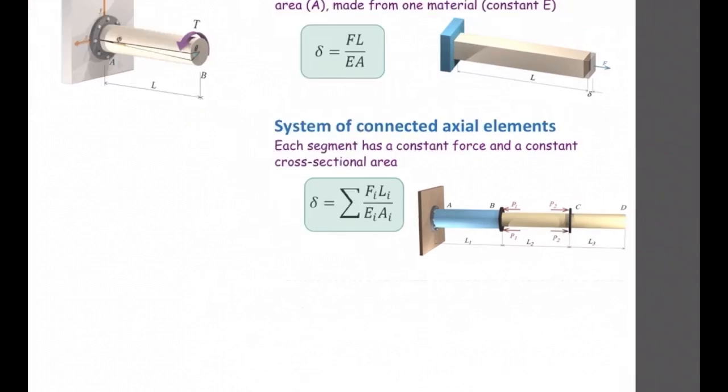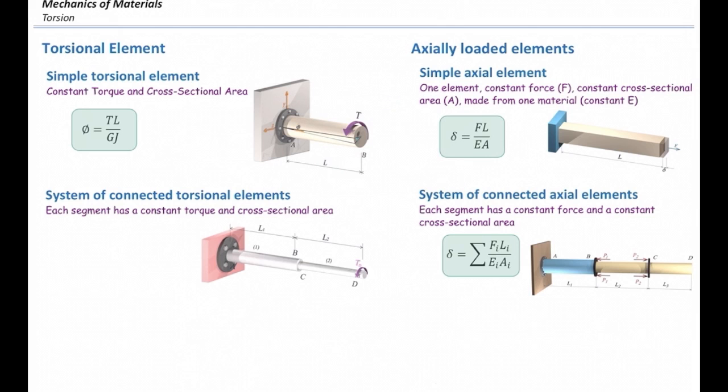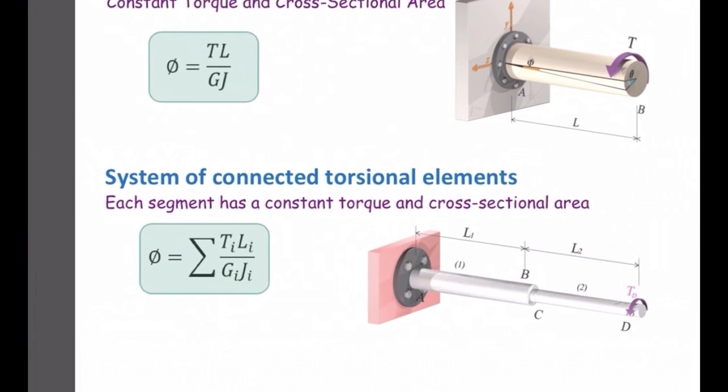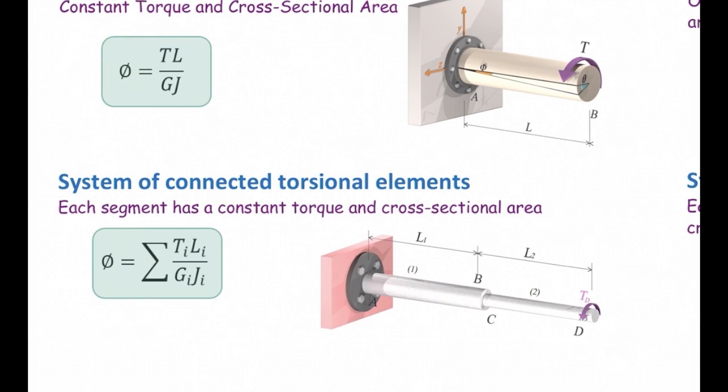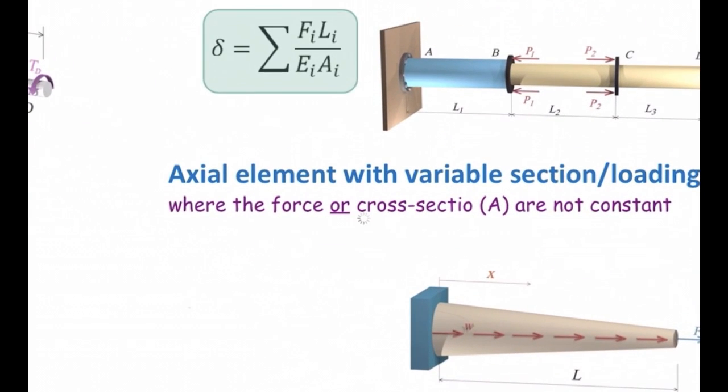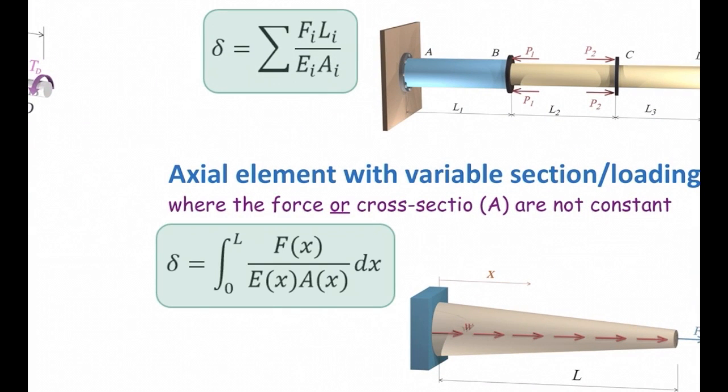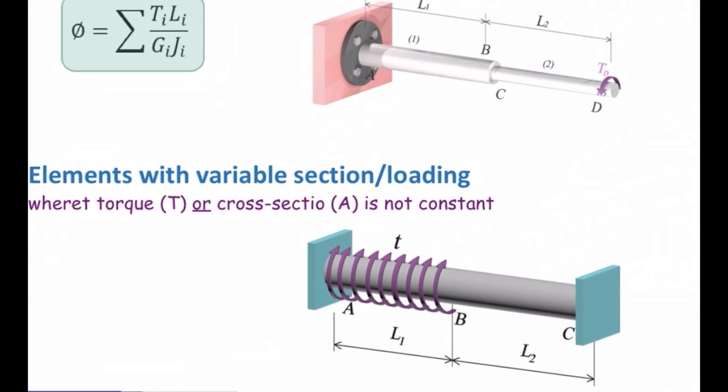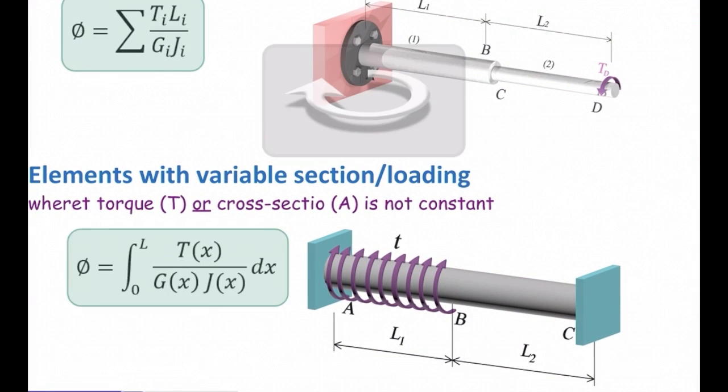Similar to this, for the system of shafts connected together, we add up the deformation, or angle of twist, in each segment to come up with the overall twist. And again, similar to this case, the section with variable loading which we had to use integral for, the case where the segment has variable cross-section or variable loading, we use this integral form to determine the deformation.